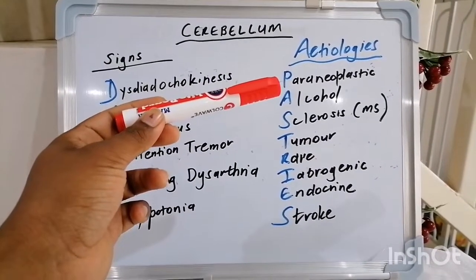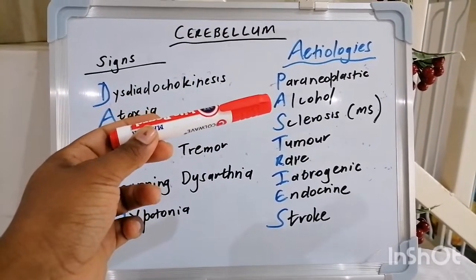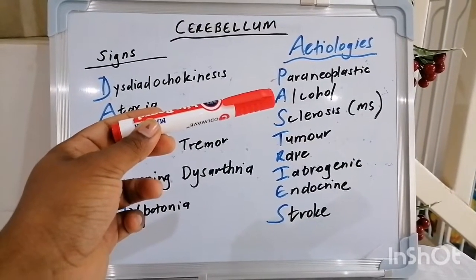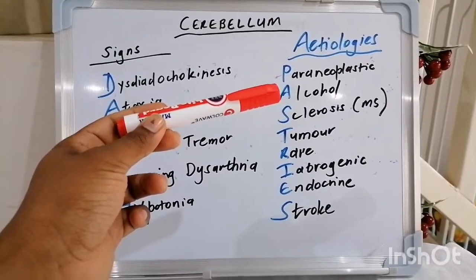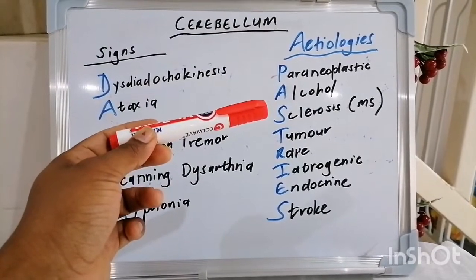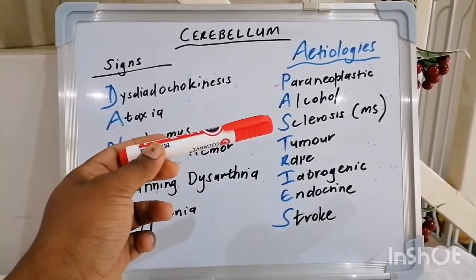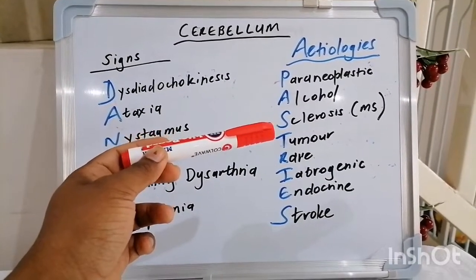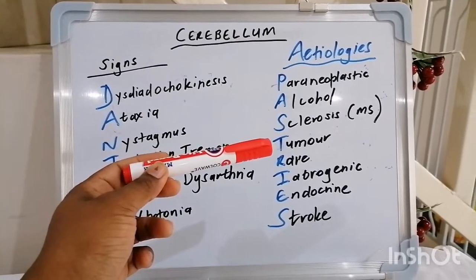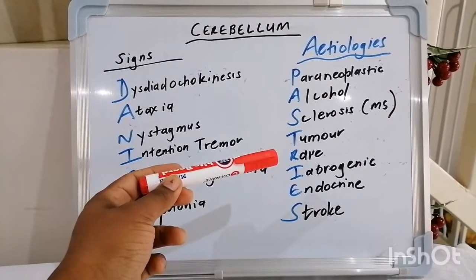P — we ask the question: is this a paraneoplastic cerebellar syndrome? A — is this alcoholic cerebellar degeneration, which is quite common. S is a bit of a misnomer because S actually stands for sclerosis, meaning multiple sclerosis. T is a tumor, especially a posterior fossa space-occupying lesion.